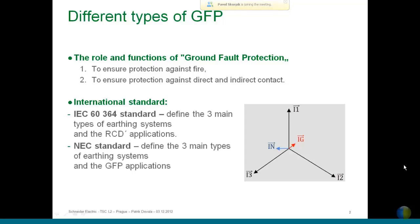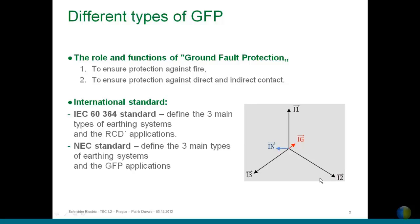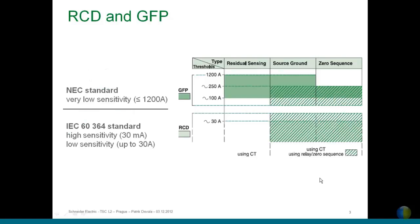Feel free to interrupt me, ask questions, or add your experience during the presentation. Regarding sensitivity: the difference between GFP and RCD is the sensitivity range. Up to 30–40 amps we speak about high or low sensitivity per IEC standard, but above this we go up to 1200 amps with ground fault protection — quite high currents to detect and protect against fire risk or equipment damage.